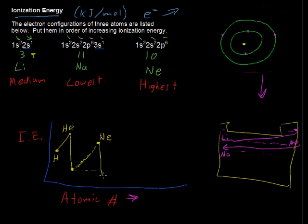So this is what happens as we go through each period. We get a higher ionization energy until we reach a noble gas, an inert gas, and then it shoots down again.